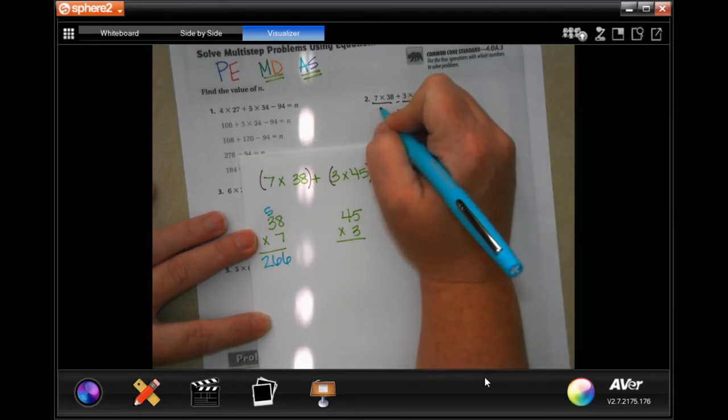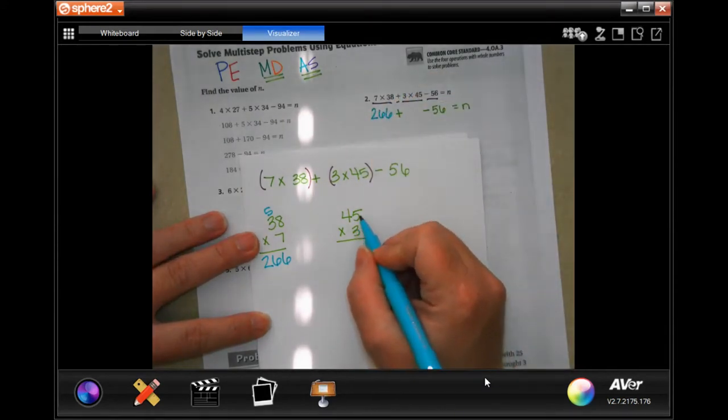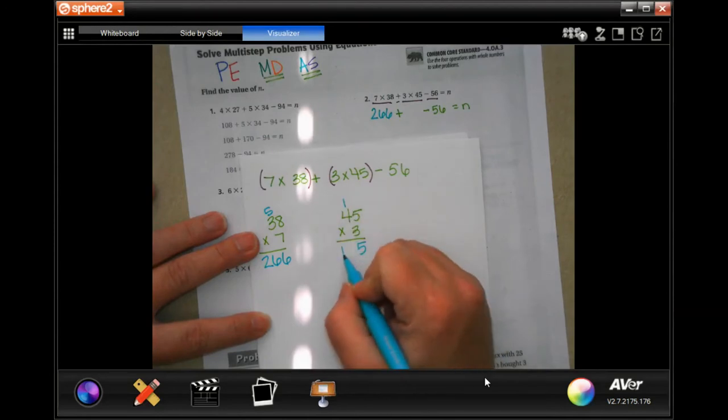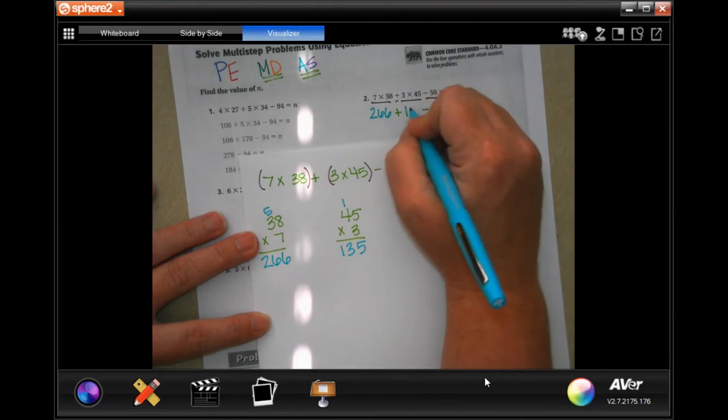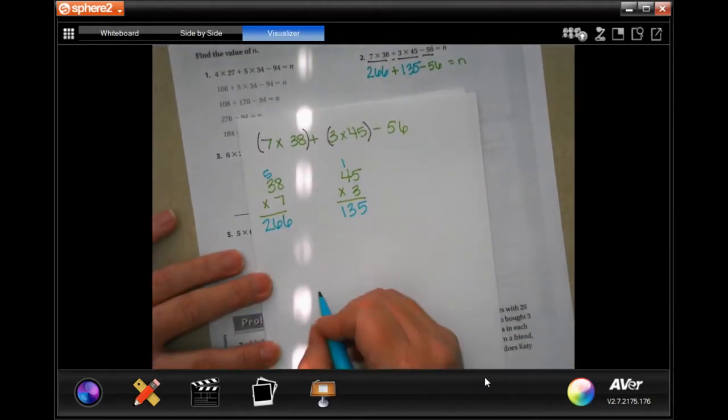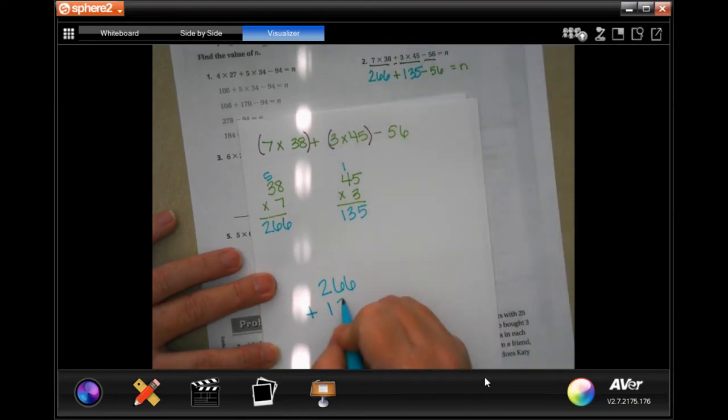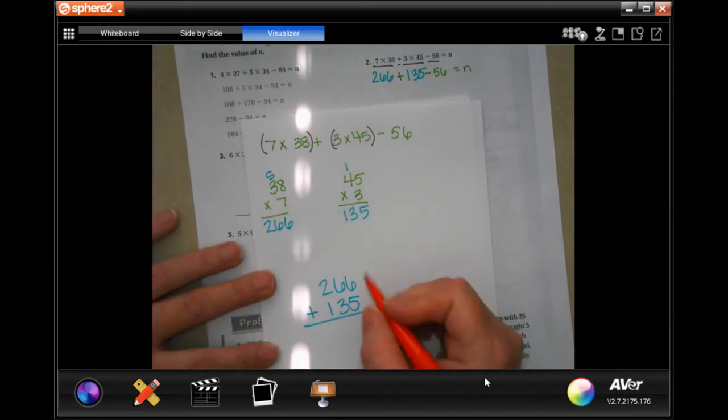So I'm going to write in my 266 right there. Now three times five is 15, carrying my one. Three times four is 12, plus one, 13. So 135. So now I'm going to go here and I'm going to do 236 plus, because there's still a plus sign there, 135. So I go ahead and add those up.